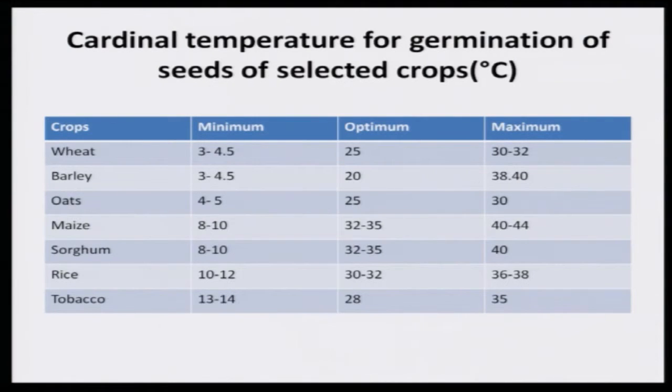For wheat germination, a minimum of 3 to 4 degrees centigrade is required. Below that, there is no germination. Similarly, if the temperature is more than 32 degrees centigrade, there is no germination of wheat seeds. It is important to note that here temperature means soil temperature, which has a greater link with air temperature — when air temperature is more, soil temperature also would be more. It is a dynamic system operating under natural conditions.